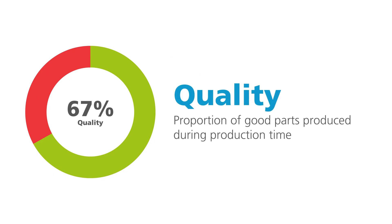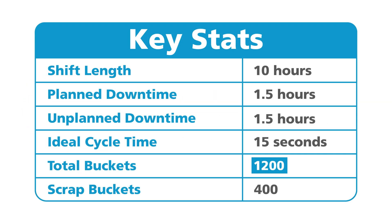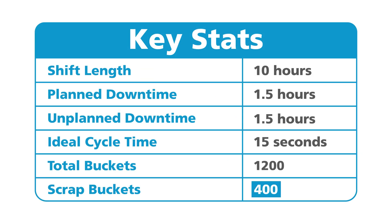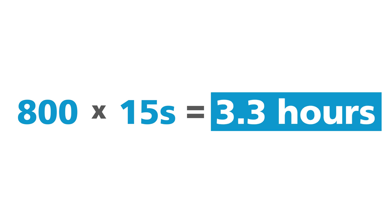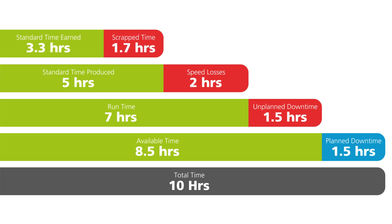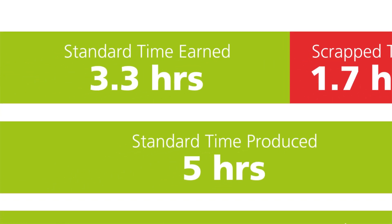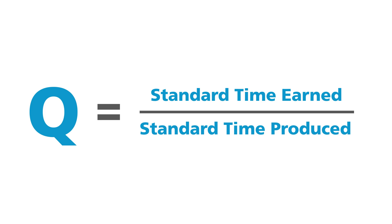Our final factor affecting our OEE is quality, which measures the proportion of good parts produced during the production time. We already know that our machine produced 1,200 buckets across the shift. However, this figure is made up of good buckets and scrap buckets. Our machine produced 400 scrap buckets across the shift, leaving 800 good buckets, which based on our 15-second cycle time should have taken 3.3 hours to produce. This is known as our standard time earned. Once we've subtracted this from our standard time produced, we are left with a scrap time of 1.7 hours. The ratio of our standard time earned to our standard time produced gives us our quality across our shift.